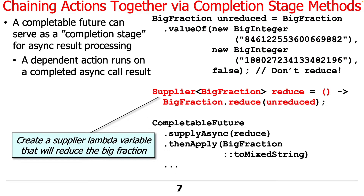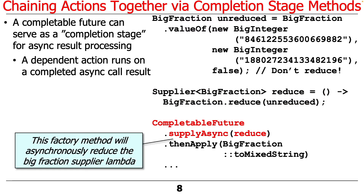We then create a supplier lambda variable — we don't have to do this, but it cleans up the code that comes afterwards. This supplier lambda, when called, will take the unreduced big fraction and reduce it, and we're going to do this off of the main thread of control to more effectively leverage multicore processing. We then call supplyAsync, which is the factory method we've been discussing. We pass in the reduce supplier lambda, which schedules the supplier to run in the background in the common fork-join pool and returns a CompletableFuture, while the computation is still taking place in the background.